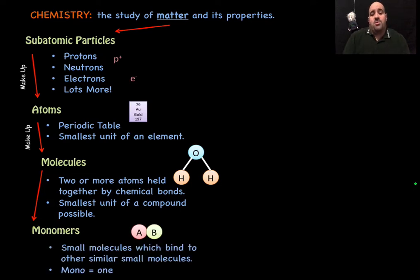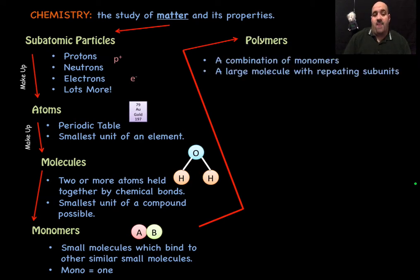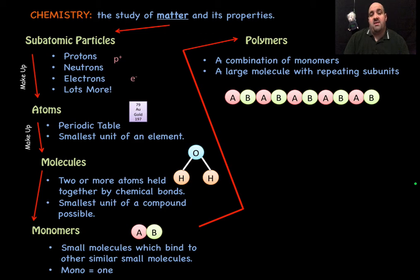Well, monomers are small molecules which like to connect with other small molecules. We have a hypothetical monomer here, AB. Monomer AB would like to connect with other small molecules, like itself or even itself, and form these long chains. When a small molecule, which likes to bond with itself, does do that, we call it a polymer. Mono means one, poly means many. So it's a combination of monomers, a polymer. It's a large molecule with repeating subunits. So we'd have AB, AB, AB, AB. It's just a long chain of monomers, a long chain of repeating molecules. That's what a polymer is.